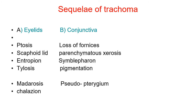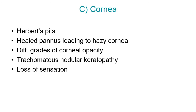The sequelae of trachoma affect the eyelids, conjunctiva, and cornea. In the eyelids: ptosis, scaphoid lid, entropion, tylosis, madarosis, and chalazion. In the conjunctiva: loss of fornices, parenchymal changes, symblepharon, pigmentation, and pseudopterygium. In the cornea: Herbert's pits, healed pannus leading to hazy cornea, different grades of corneal opacity, dellen, nodular keratopathy, and loss of sensation.